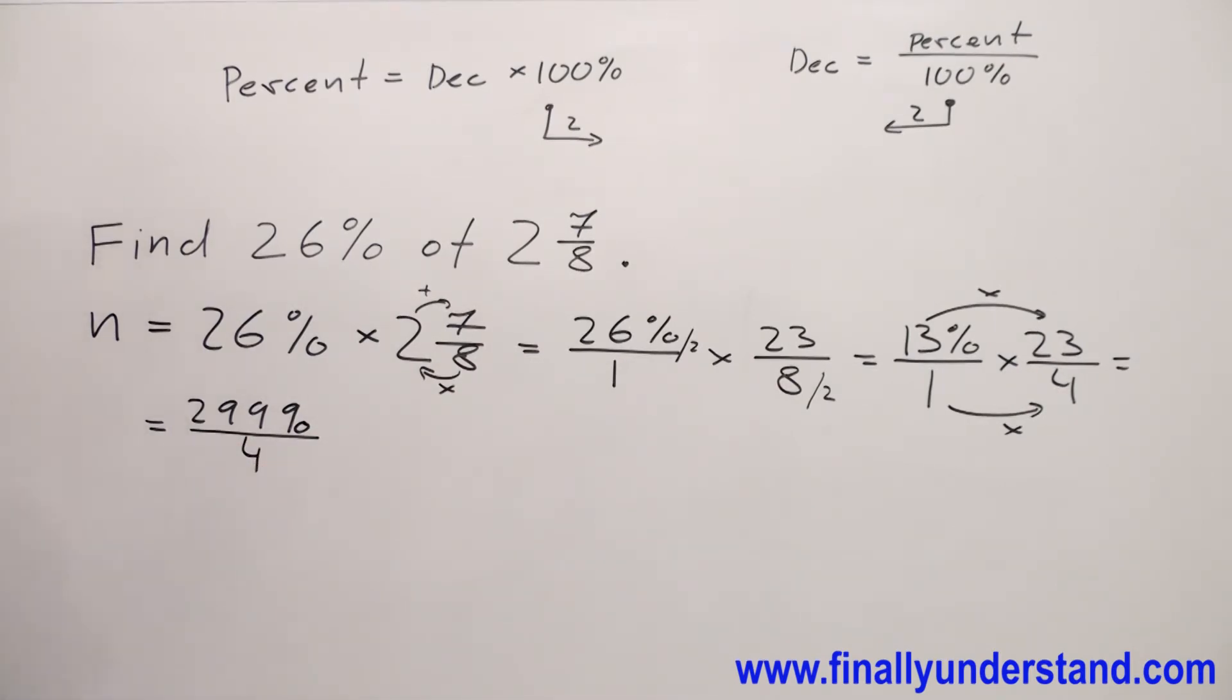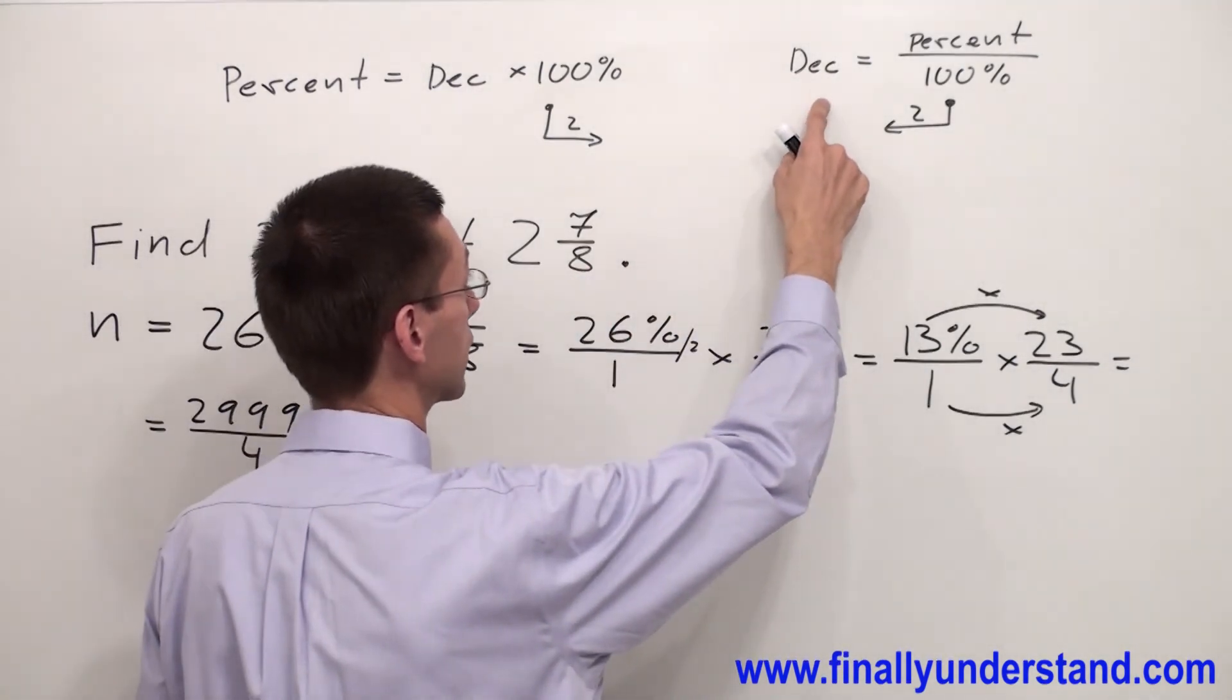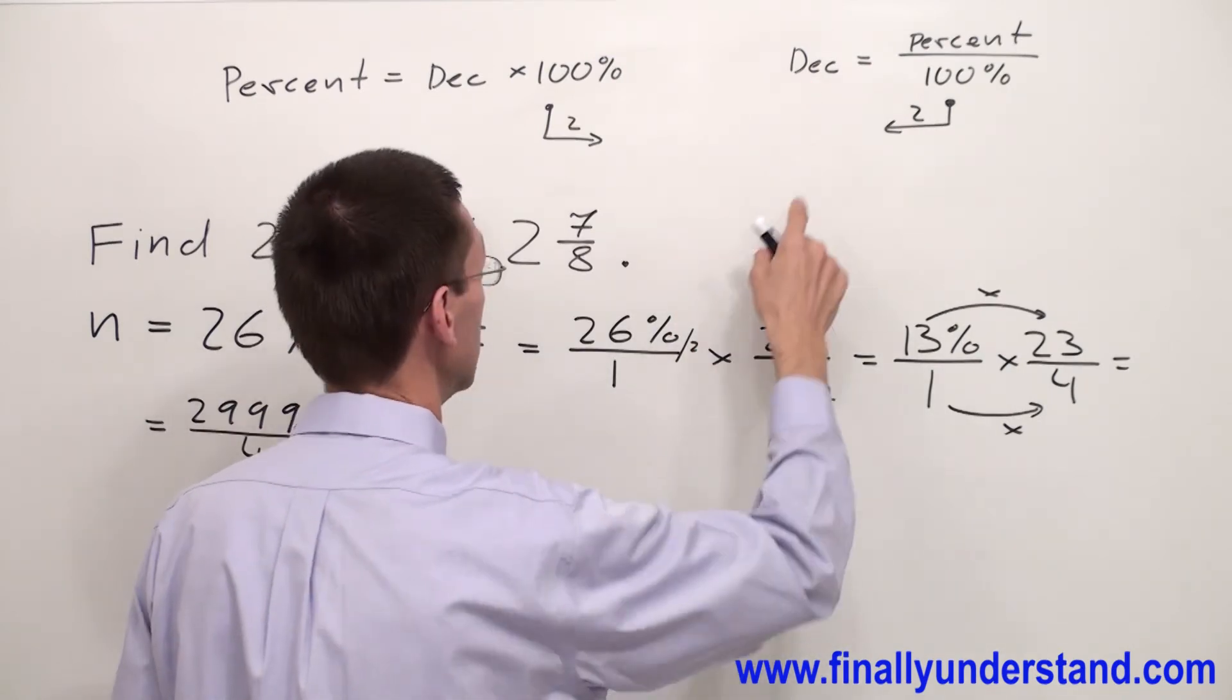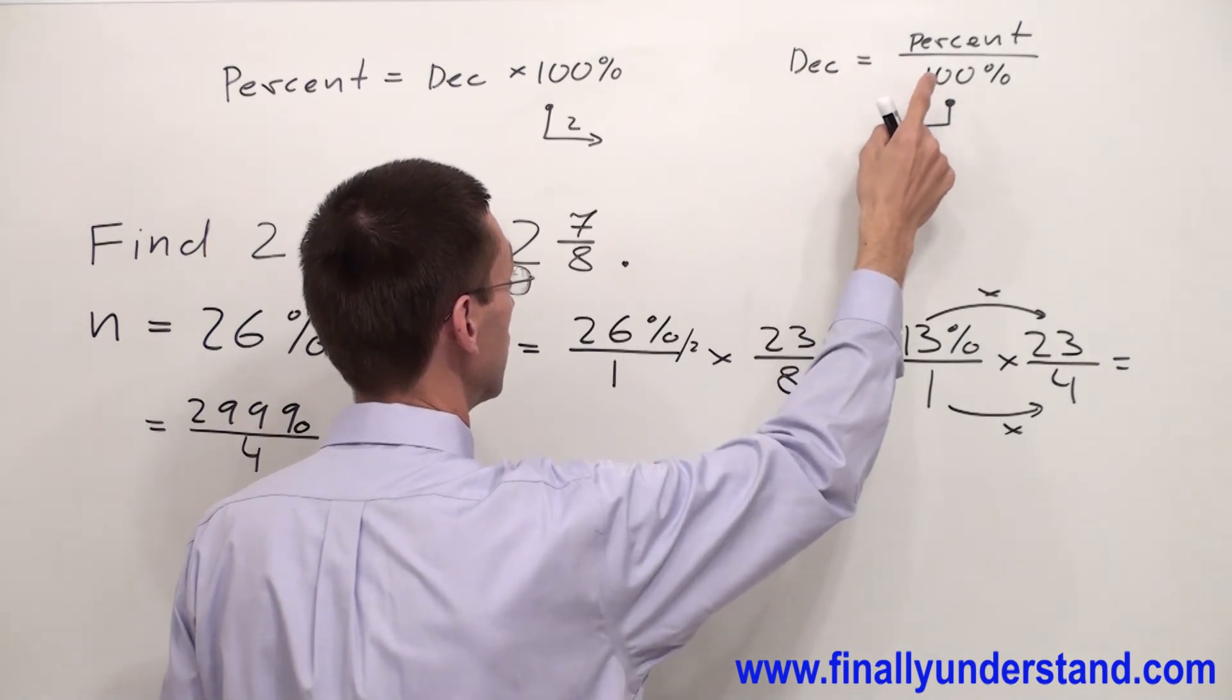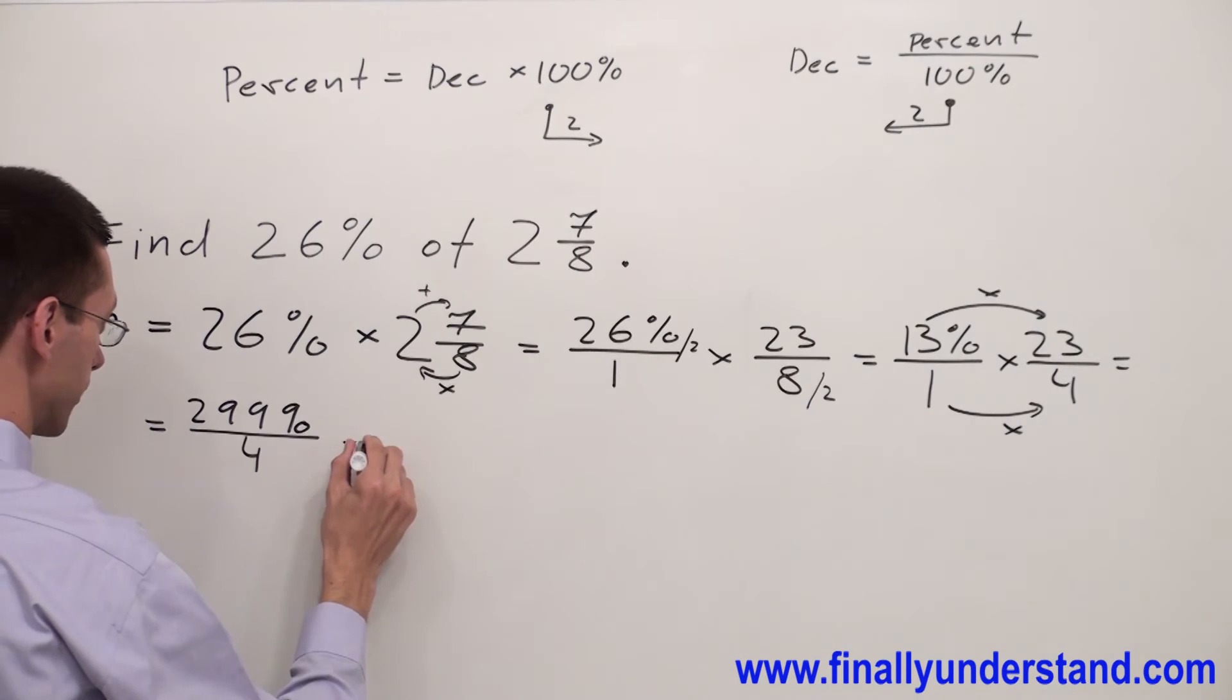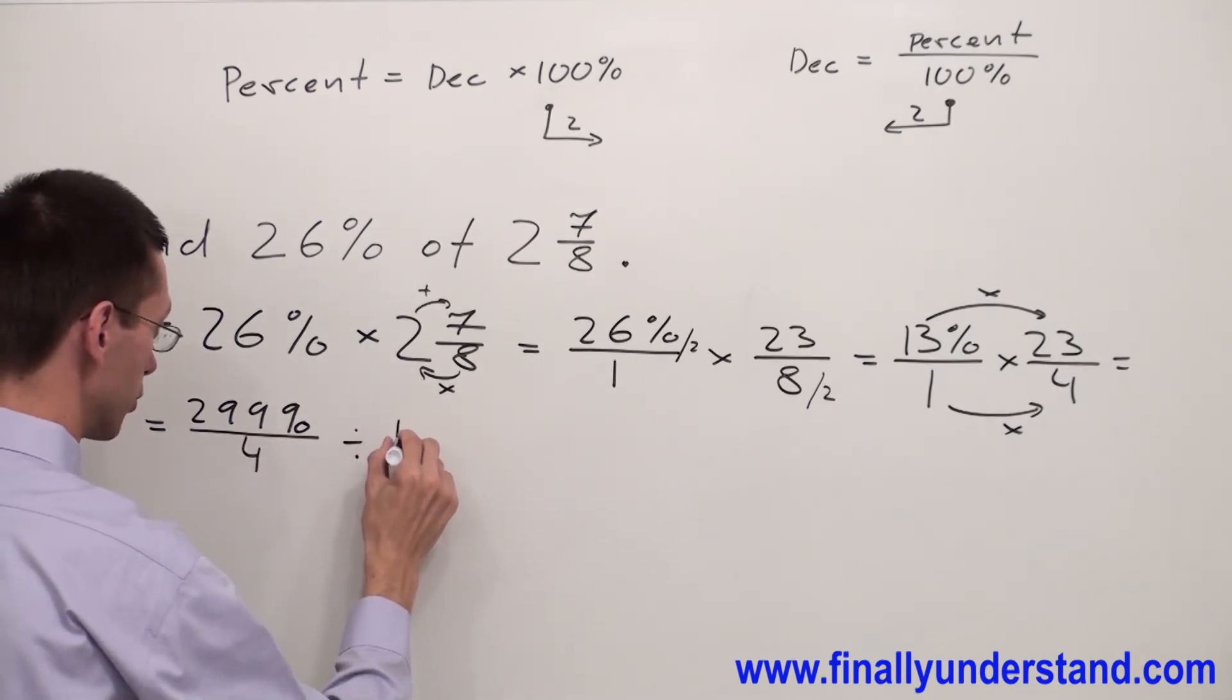Now, the question says 'find,' which means we have to find the number. Anytime we are looking for a number, we are going to use the formula for decimals - this decimal can also be replaced by number. So anytime we are looking for a number, we have to divide the percent number by 100%. That's why I'm going to divide this fraction by 100%.